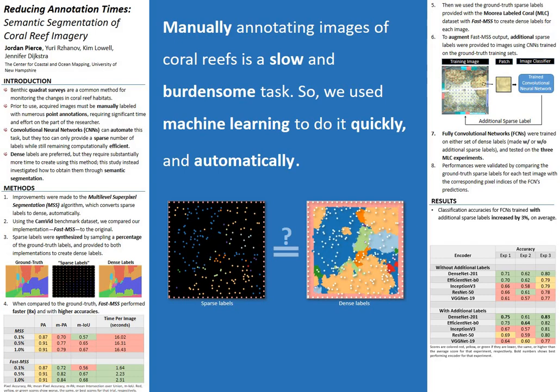This provides some evidence that this technique could be used by benthic ecologists to artificially increase the amount of sparse labels in each image without having to manually add them. These scores represent the baseline for performing semantic segmentation using the MLC dataset, and we believe they are suitable for many ecological applications. We're also confident that these FCNs could increase in performance if provided with additional images to learn from.